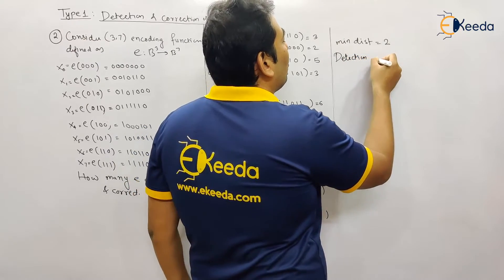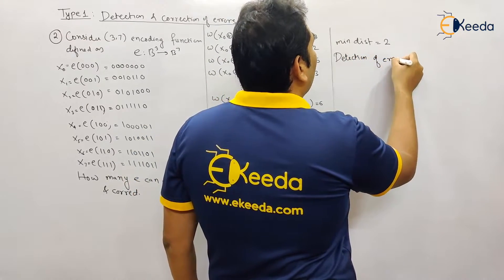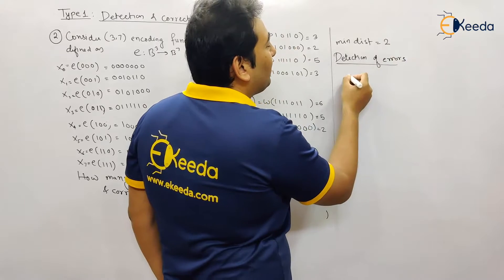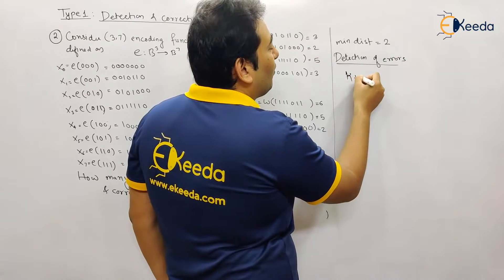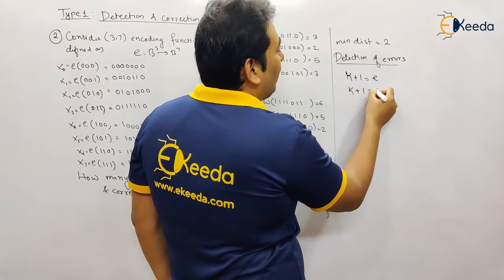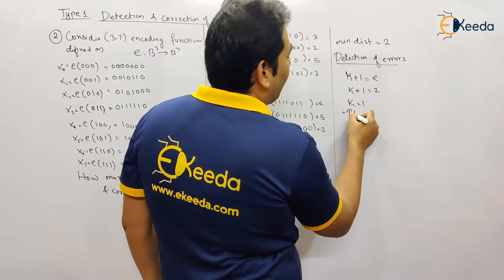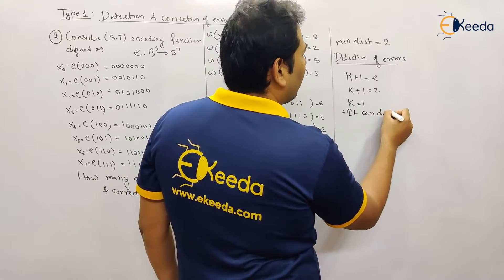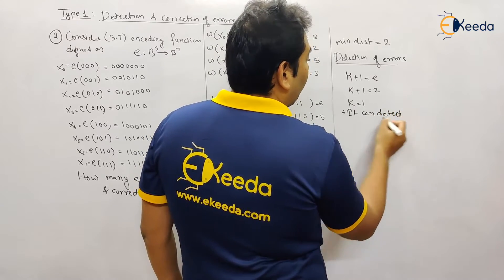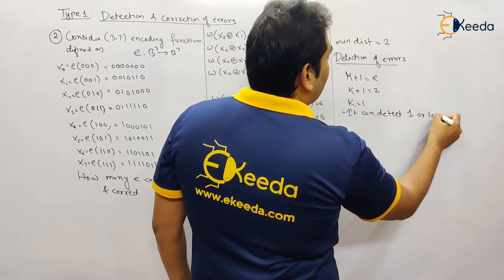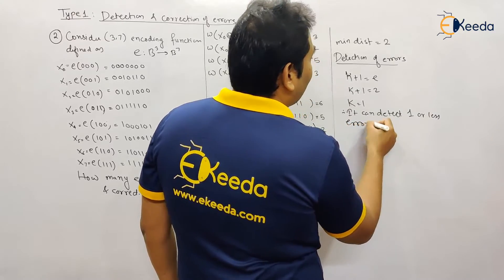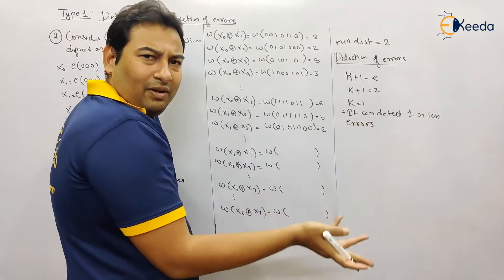What is the next thing? Detection and correction of the error. Same story. For detecting the error, this minimum distance should be equal to k plus 1. So k plus 1 equals 2, therefore k equals 1. Therefore it can detect how many errors? Same story, because in the last problem also we got minimum distance as 2, so the remaining story is the same. It can detect one or less errors.